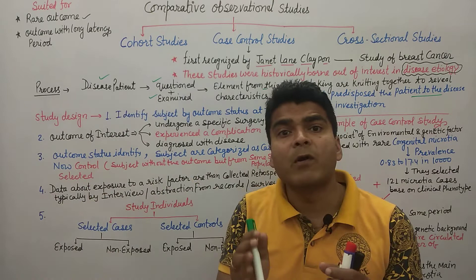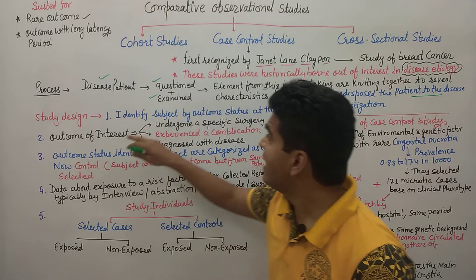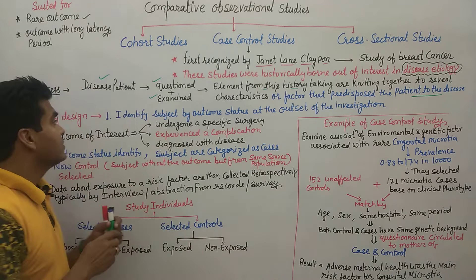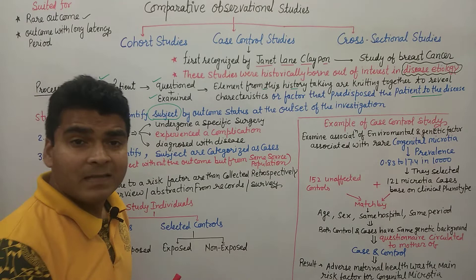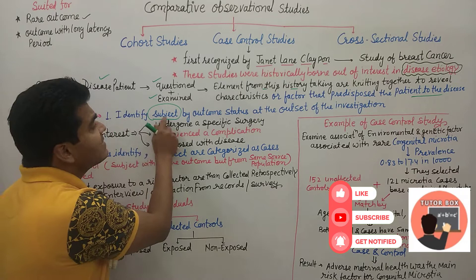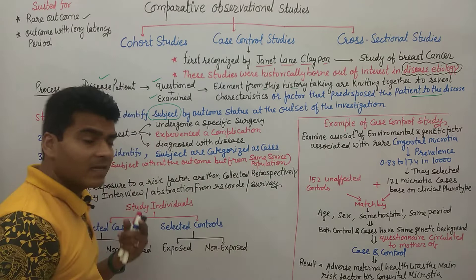Now the question comes: how do we design a case control study? What are the important points? The first step is to identify subjects by outcome status at the outset of the investigation. Subject means the patient. We identify the patient by the rare or long-latency outcome we are studying.